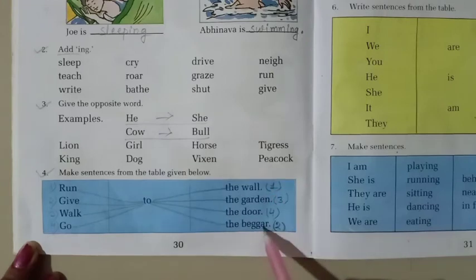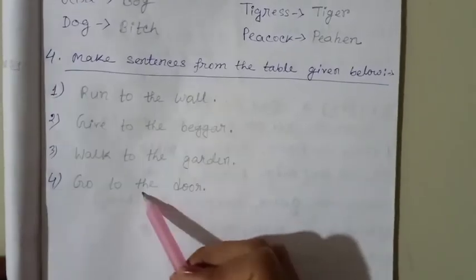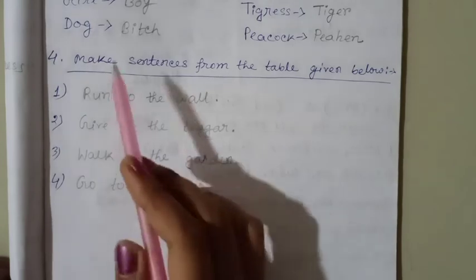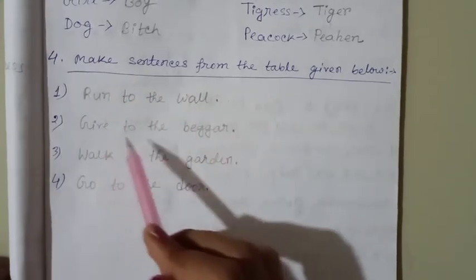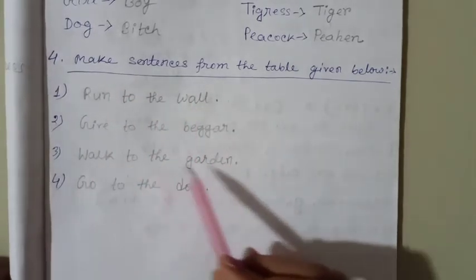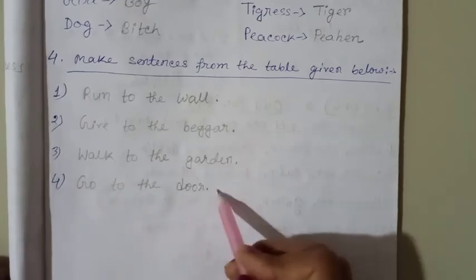Now, write these sentences like this. Run to the wall. Give to the beggar. Walk to the garden. Go to the door.